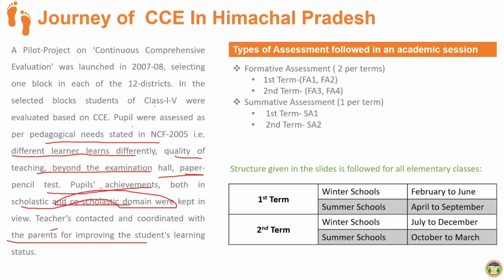Now I will discuss the types of assessment followed in an academic session. Two types of assessments are made: formative and summative assessment. In formative assessment, there are FA1 and FA2 in the first term, and FA3 and FA4 in the second term. For summative assessment, there is SA1 in the first term and SA2 in the second term.